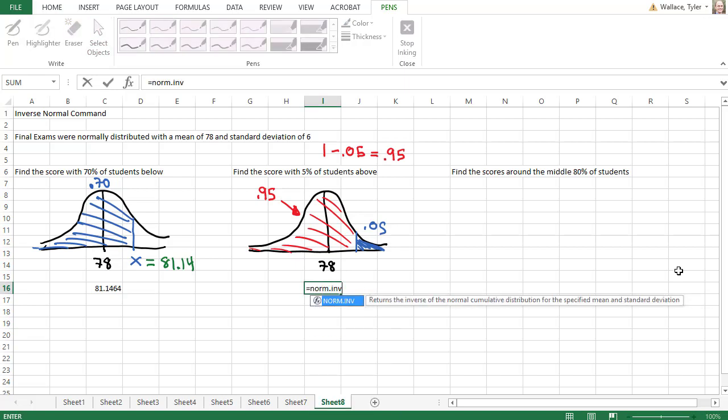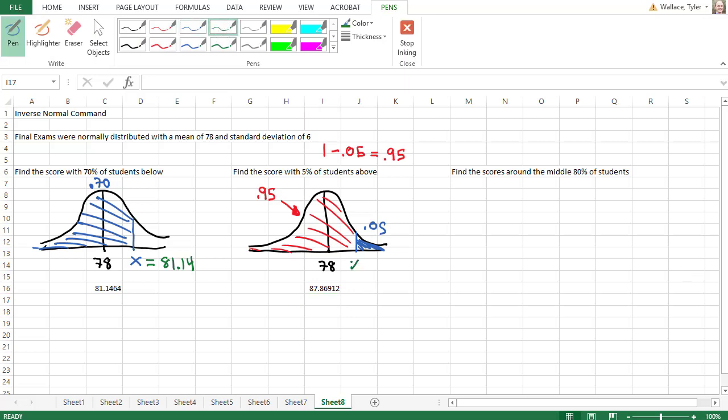Equals norm.inv for inverse, because we know the probability is 0.95, the mean is 78, and the standard deviation is 6. Putting that in parentheses, separated by commas, and when we hit Enter, we find that the x score that puts 5% of students above it is 87.87. 5% of students scored better than 87.87 on this exam.